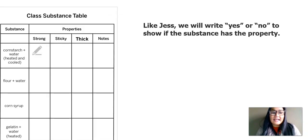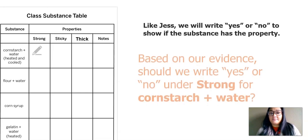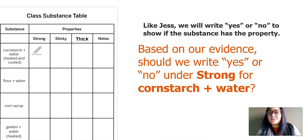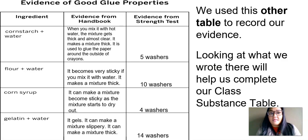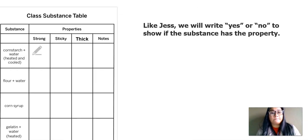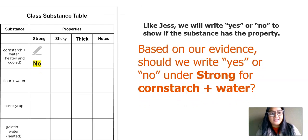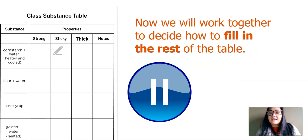Now you're going to see the class substance table. We're going to write yes or no to show whether a substance has the property. My first question is: based on our evidence, should we write yes or no under strong for cornstarch and water? Let me go back to cornstarch and water — we're looking for strong. I think no. If it has that property, say yes; if it doesn't, say no. Go ahead and pause your video.